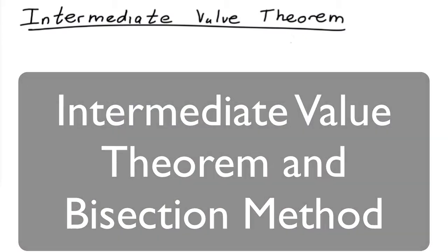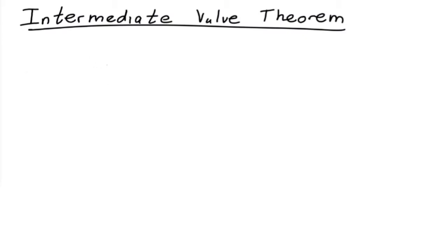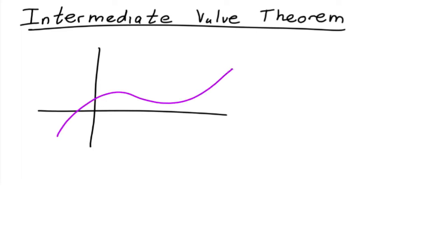The Intermediate Value Theorem basically says that if you have a function and that function is continuous — let me draw an example of a continuous function and plot two points. Let's say this is A and this is B, so you've got a closed interval from A to B. There are corresponding Y values: this one is F of B, and this one is F of A.